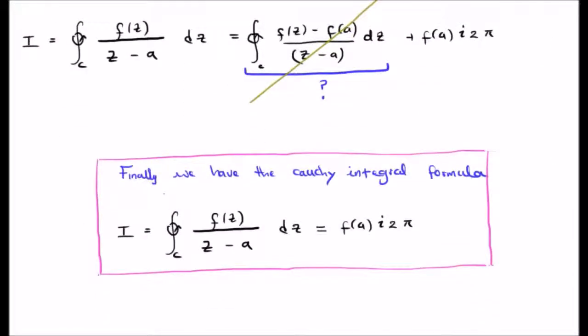Finally we have the Cauchy integral formula that the integral of f of z which is an analytic function divided by z minus a is twice pi i times f of a. Just remember by the way that we could rewrite this as capital F of z. Capital F of z is the function which is not analytic, small f of z is analytic.